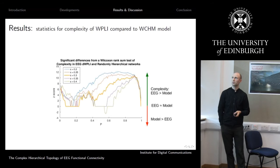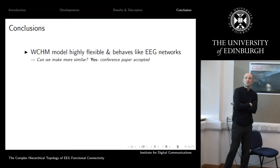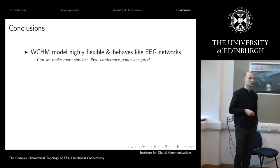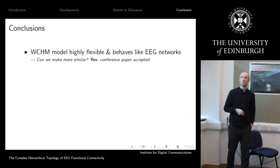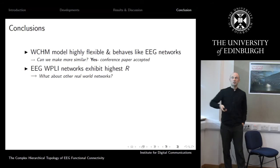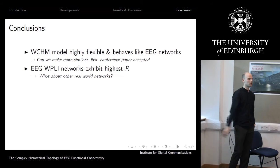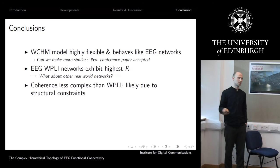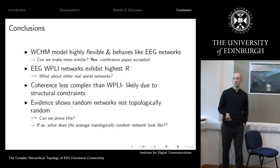In conclusion: the model is quite flexible and behaves similarly to the EEG. Work being presented at the complex networks conference in Milan will introduce an additional parameter for increasing modularity. We show that WPLI networks exhibit the highest complexity observed. Coherence is less complex than the phase-dependent measure, which we attribute to the volume conduction effect. Additionally, the evidence suggests that random networks are not topologically random — their topology is very restricted and similar across instances, making them a poor representative of an average network when compared with real-world networks like EEG.